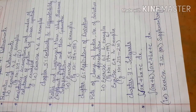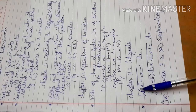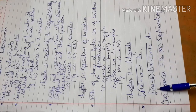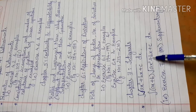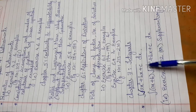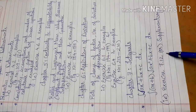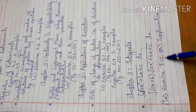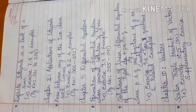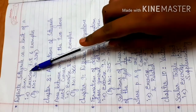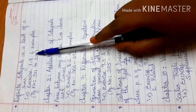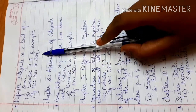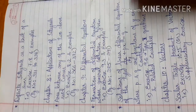Next is Chapter 7, Integrals. The deleted integral types are the integral of √(ax² + bx + c) dx, and the integral of (px + q)√(ax² + bx + c) dx. That is Exercise 7.8 and related examples, page number 331 to 334.